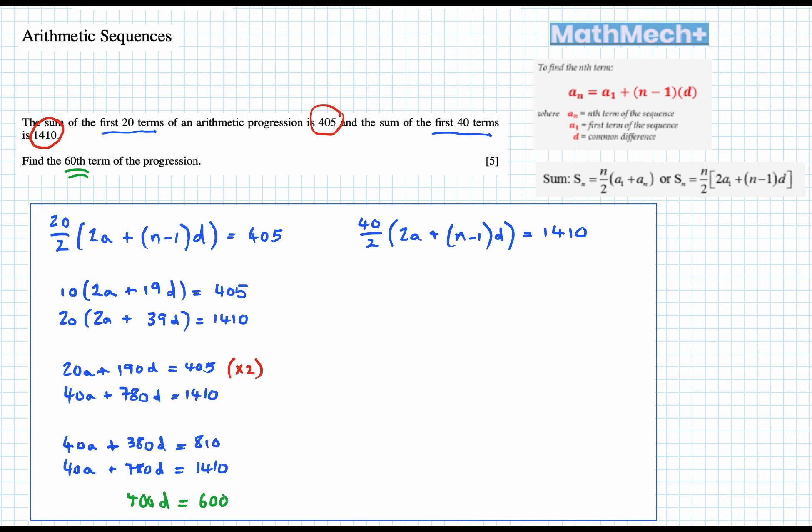So minus 400d equals minus 600. We got our first answer - the difference is 600 divided by 400, so d equals 3 over 2 or 1.5.